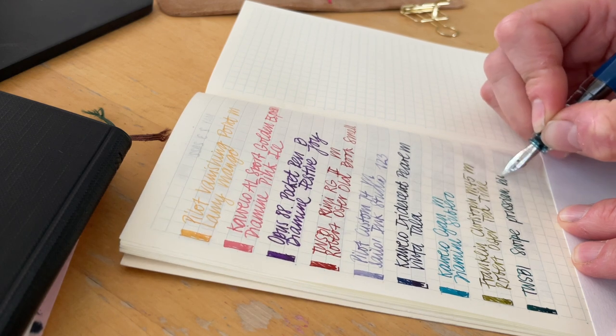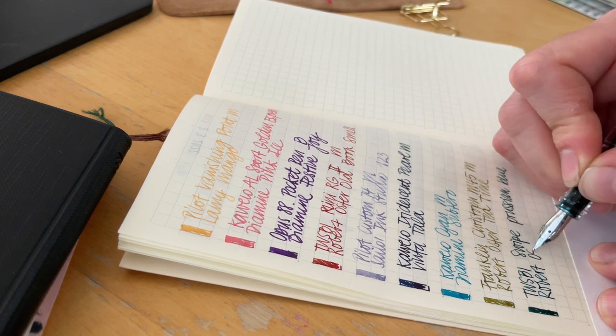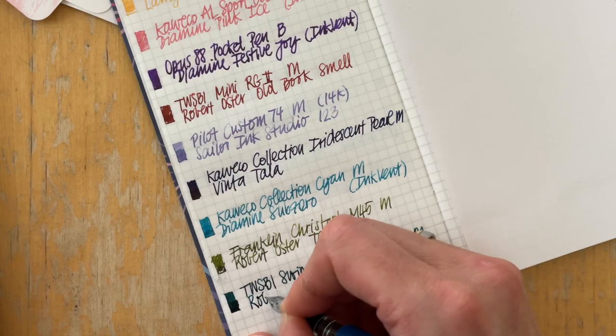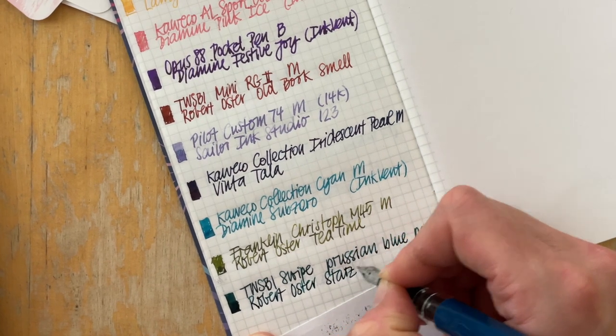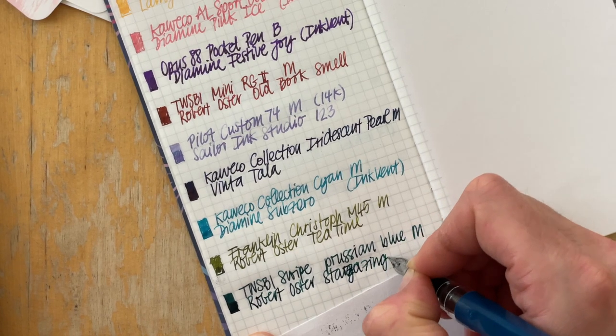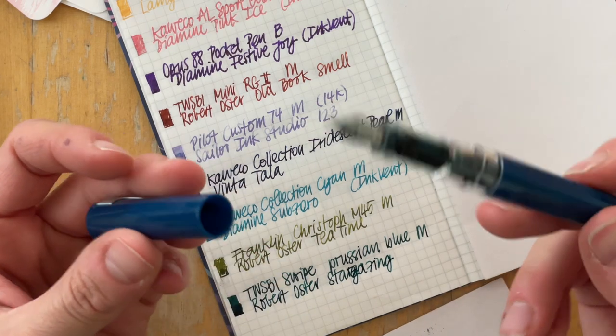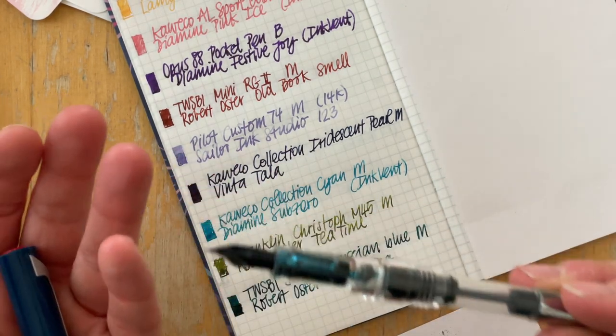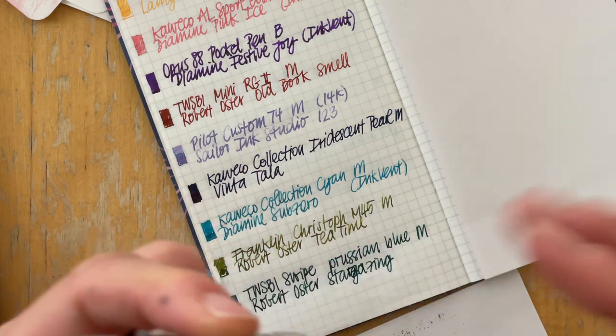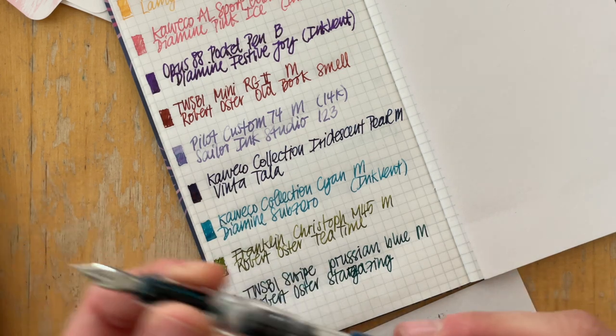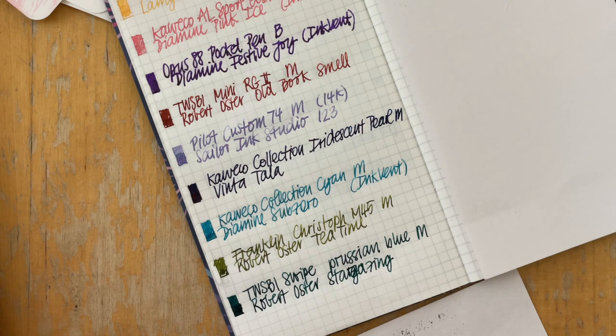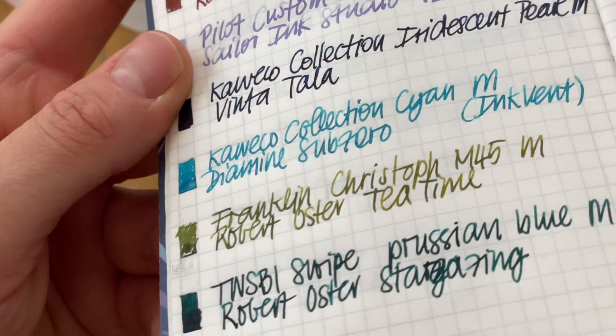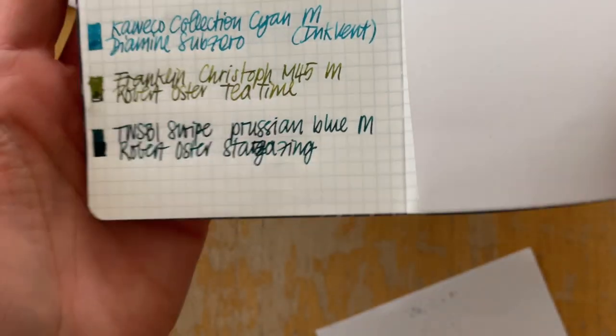This is the TWSBI Swipe in the Prussian blue with an M nib. And the ink is Robert Oster stargazing. And as I said, or I mentioned it earlier, this pen gave me so much trouble. I was, I never, I wasn't sure. Should I use it? How will it write? Will it even start? I don't see a lot of shimmer in the cartridge here. And there is some shimmer residue right here. Maybe all the shimmer is already out and that's why it doesn't give me any trouble. Let me hold up the, when I look at it from the side, I don't see any shimmer in the ink as well. So I assume that that is exactly what is happening.